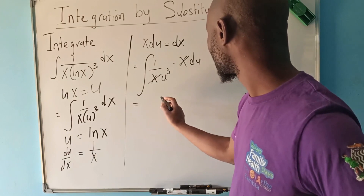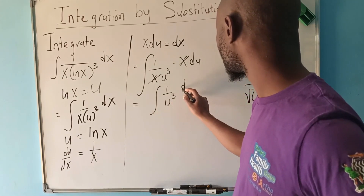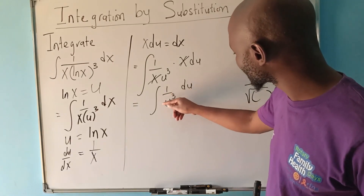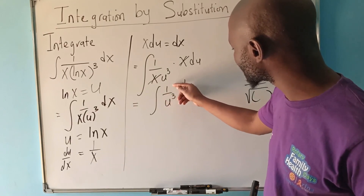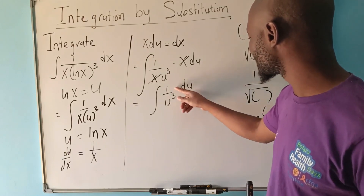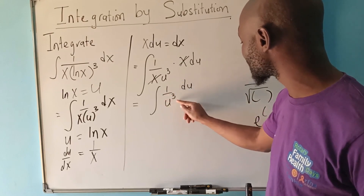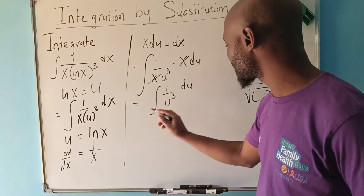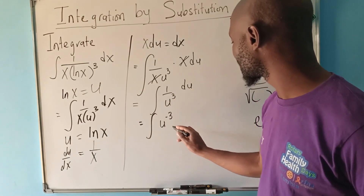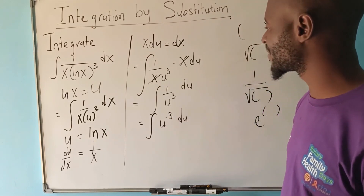After simplification, the x terms cancel and we get the integral of one over u to the power three, du. Since we have u cubed in the denominator, we can bring it to the numerator. Every time we move a term from the denominator to the numerator, the power changes sign — it becomes negative. So this becomes the integral of u to the power negative three, with respect to u.